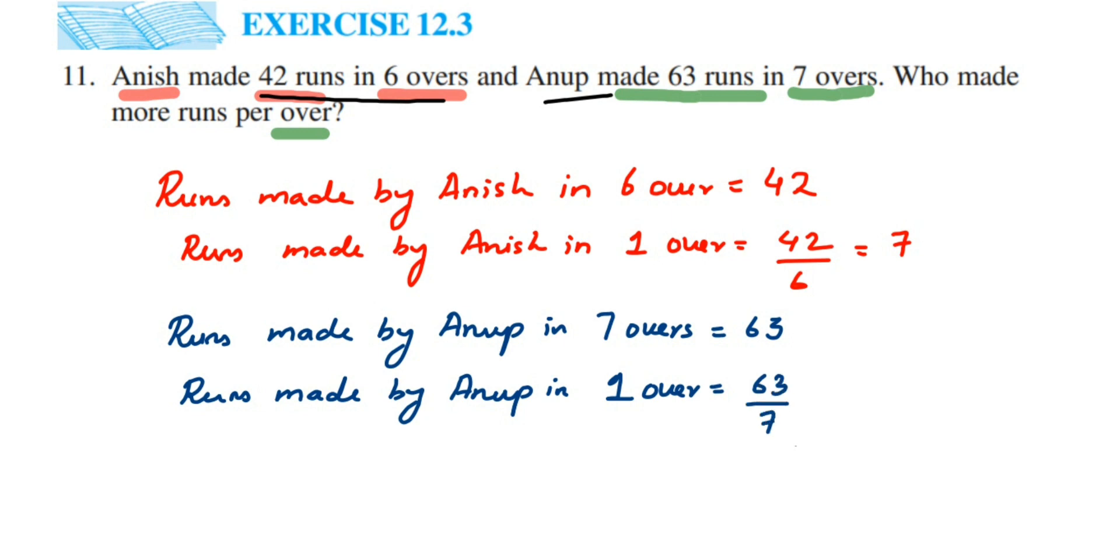Now we are going to cancel them. So 7 ones are 7, 7 nines are 63. So which is equal to 9. So 9 runs.